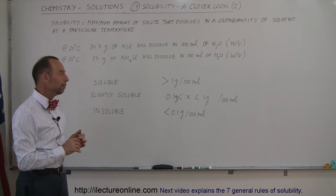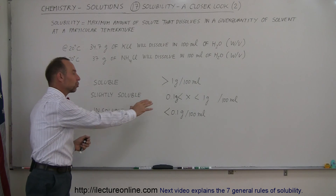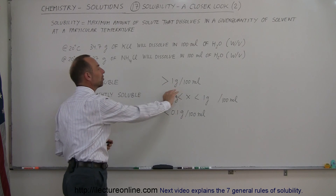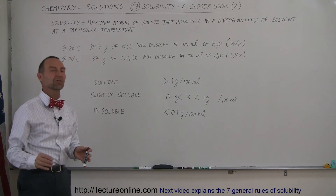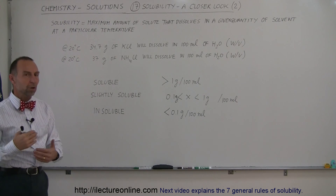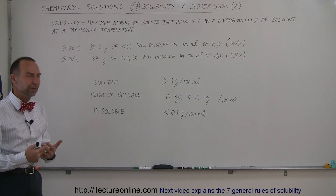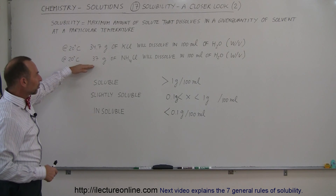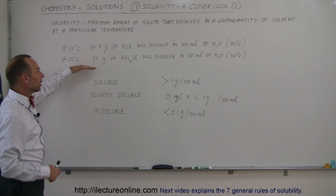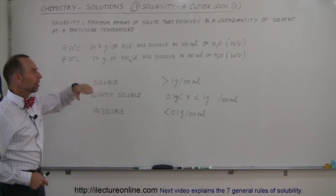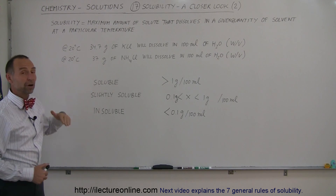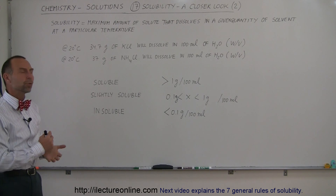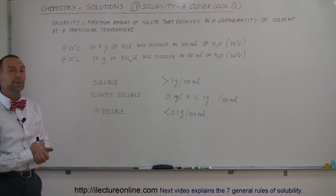So again, there are some gray areas, but in general, by these rules, we can say insoluble when it's less than 0.1 grams, soluble when it's more than one gram, and if it falls in between, we call it slightly soluble. It's always about the extent of dissolving. Some solutes will dissolve very well and a lot of quantity will get dissolved in just 100 milliliters of water, while others will be far less. These are the rules that we tend to follow when we talk about solubility.